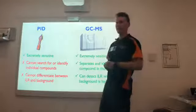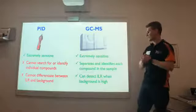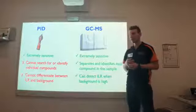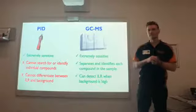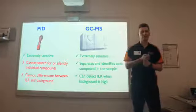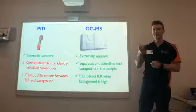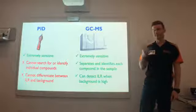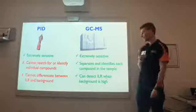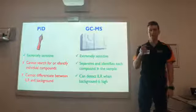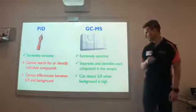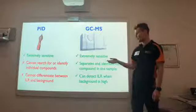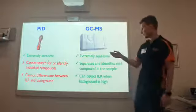So what's our PID then? Our PID is extremely sensitive — and so is our GC. Unfortunately, where the PID falls a little short is it can't search for and cannot identify individual compounds. You can't set it to search only for toluene. You can set a response factor on your machine, but what you're doing is telling the machine that what you're seeing is all toluene. The PID is unable to differentiate between ILR — Ignitable Liquid Residue — and background.